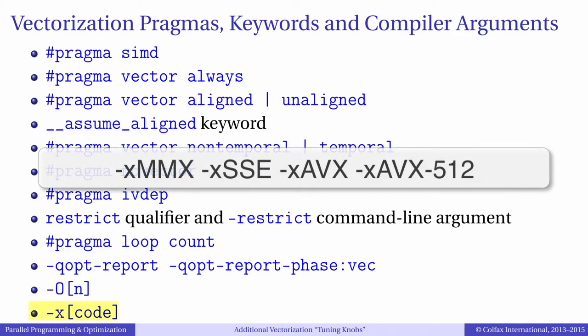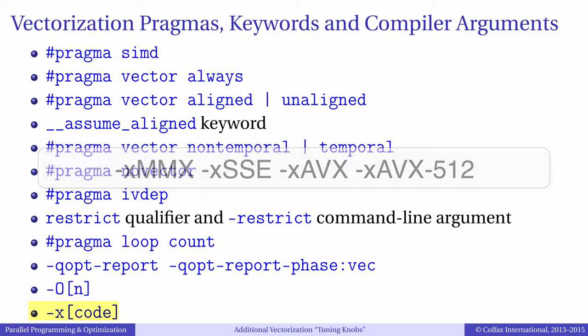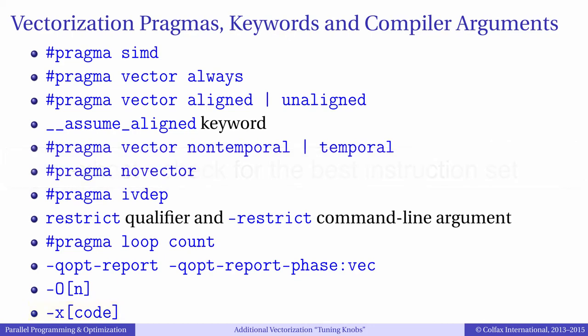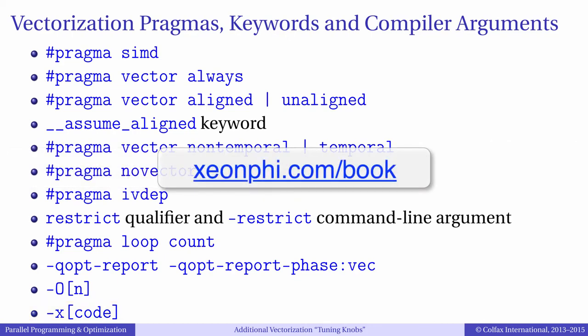Finally, xcode is an argument that tells the compiler to implement vectorization with a specific instruction set. If you are going to run the code on the same processor on which you are compiling, you can just use dash xhost to get access to the most recent instruction set in your processor. For more details on those tuning knobs, see our book or the compiler reference.